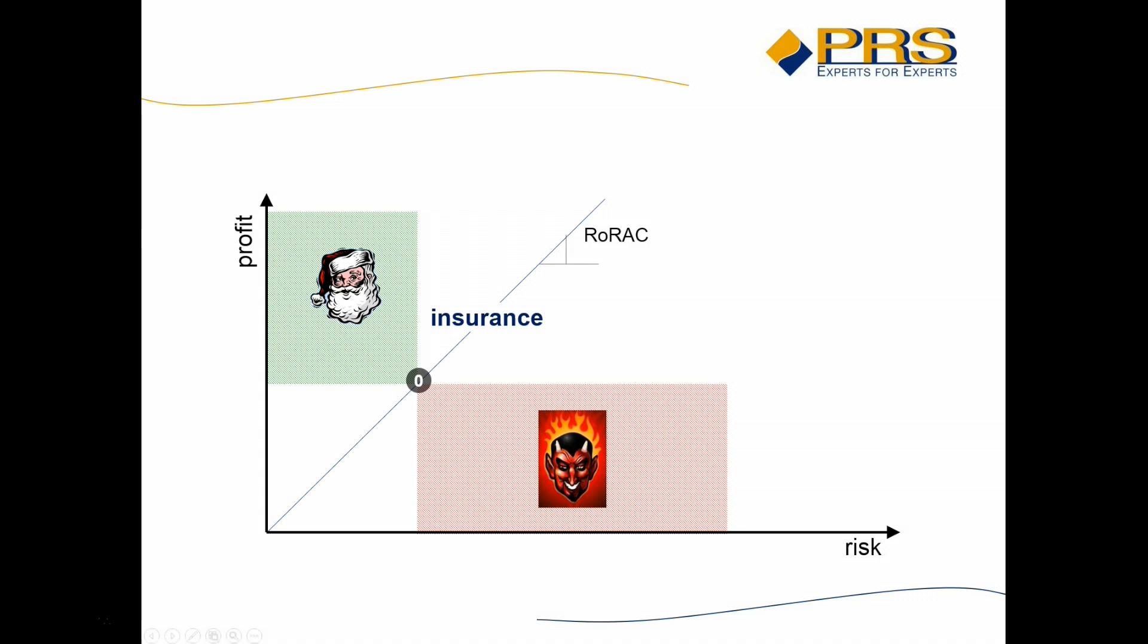But the usual quadrant of operations of an insurance company is the one where we assume the risk of our policyholders and where we obtain a reasonable remuneration for this. Now there's one thing where you may want to ask the question: what is this quadrant? The one where we reduce our risk and forsake some of our profit. Well this is exactly what happens when you buy reinsurance. You cede some of your own risk and in return the reinsurer will get some of the premium that you pay for him.